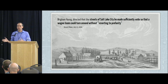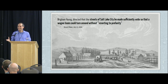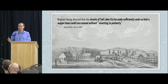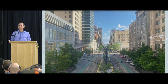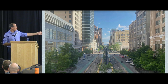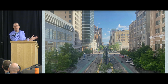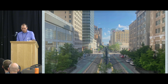Brigham Young was the one who led them across the country — Joseph Smith was killed in Nauvoo — and he started laying out the city. It is said that he declared the streets of Salt Lake should be made sufficiently wide so that a wagon team could turn around without resorting to profanity. So really you should be able to turn a wagon around in the streets. These streets can be a bit hostile to pedestrians, but if you use them correctly you can get creative. We now have light rail running down Main Street, which breaks it up and makes it a little more pedestrian-friendly.